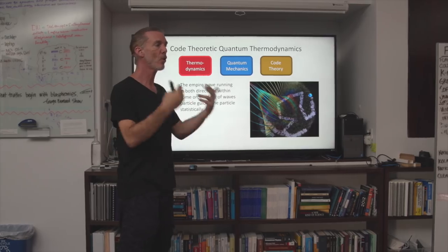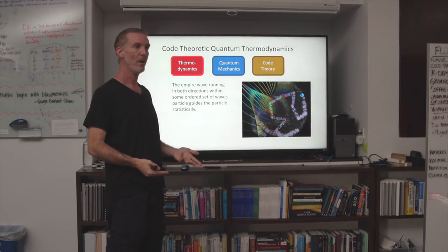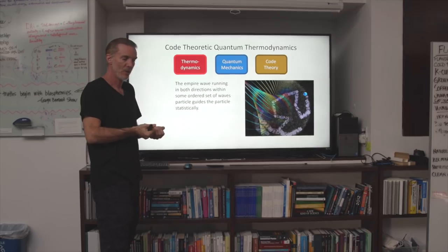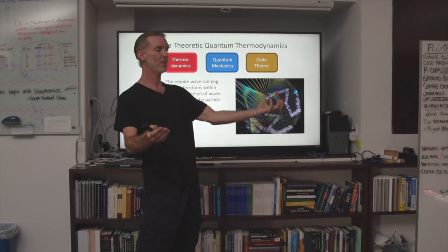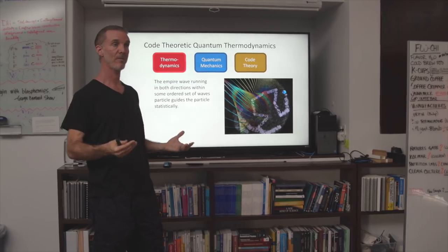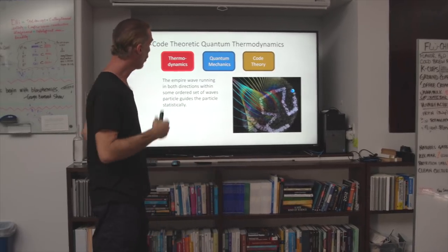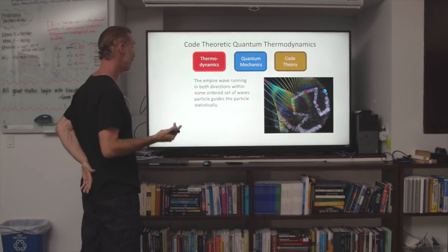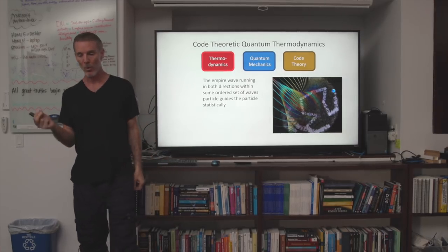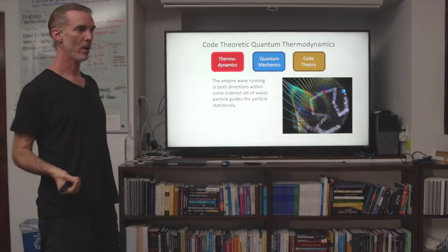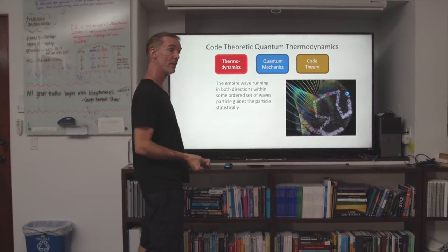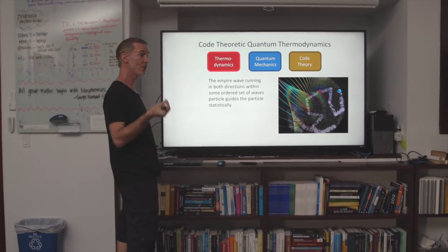The empire wave running in both directions of time, within some ordered set of waves, guides the particle statistically. Our physics will have to integrate — when we do computations to understand the energy landscape — the time-domain empire wave. You can never take just a single empire frame: it's too boring, there are no physics, no quasi-particles in one frame. You only will have physics and the notion of energy landscapes with an ordered set of two or more shift vector actions. You need an animation of at least two.